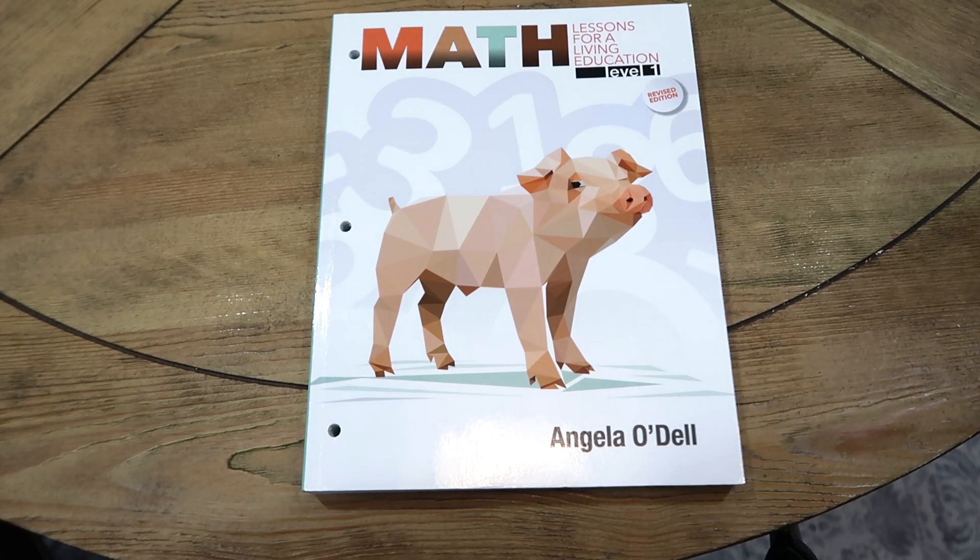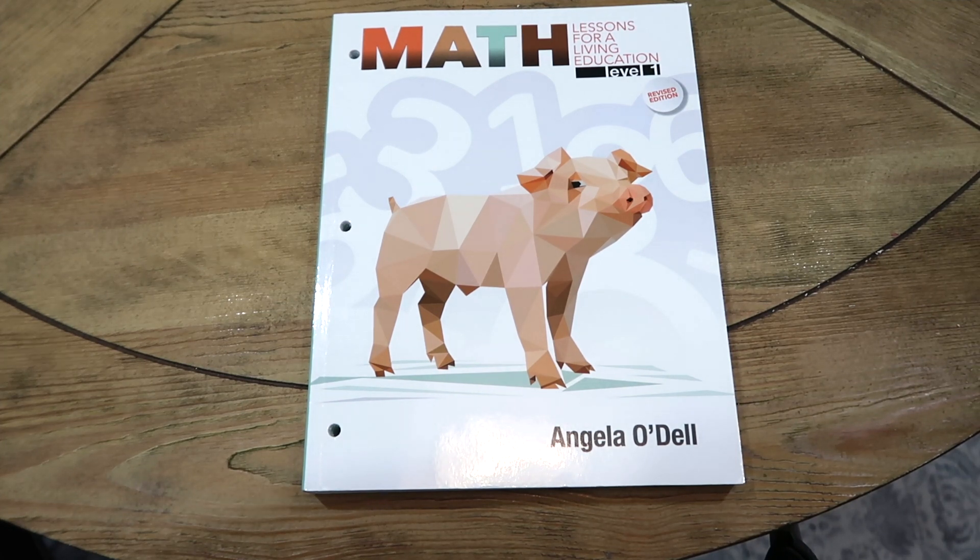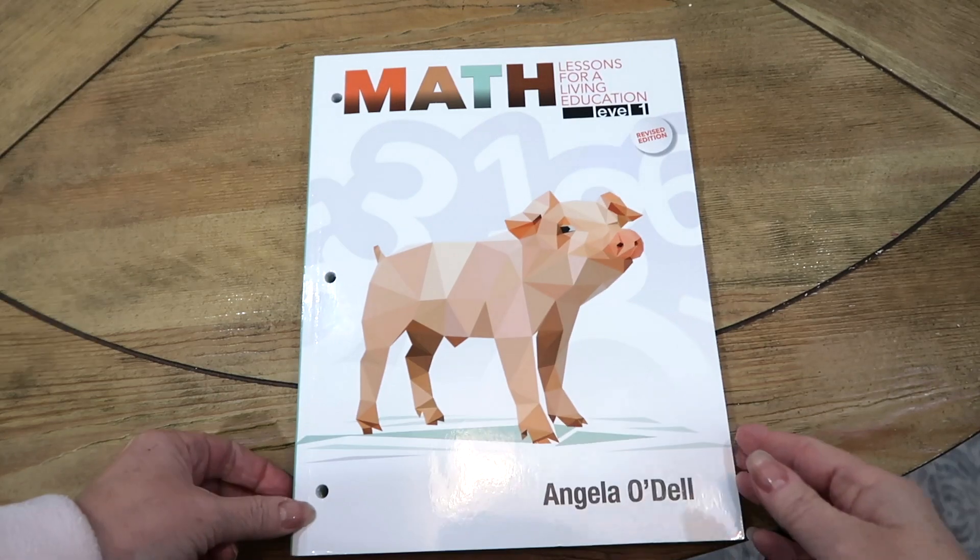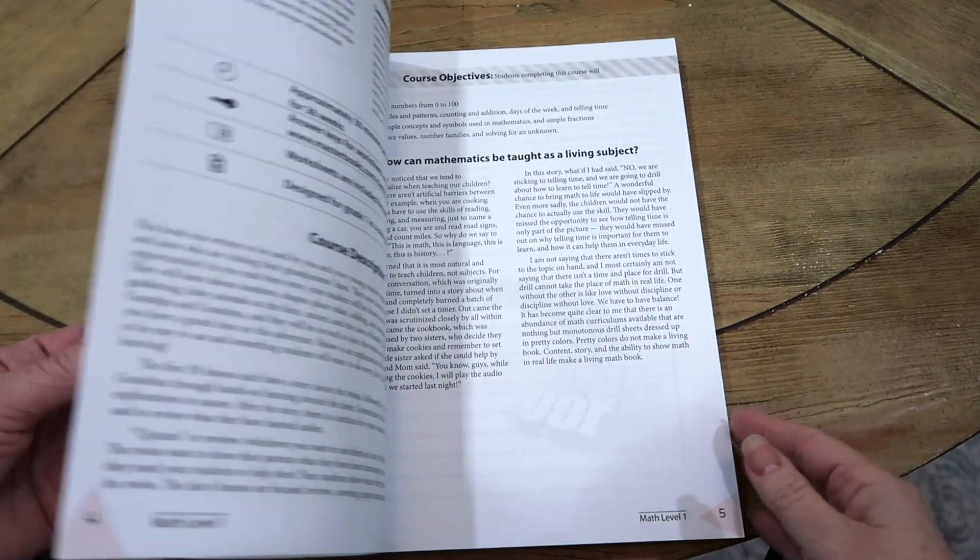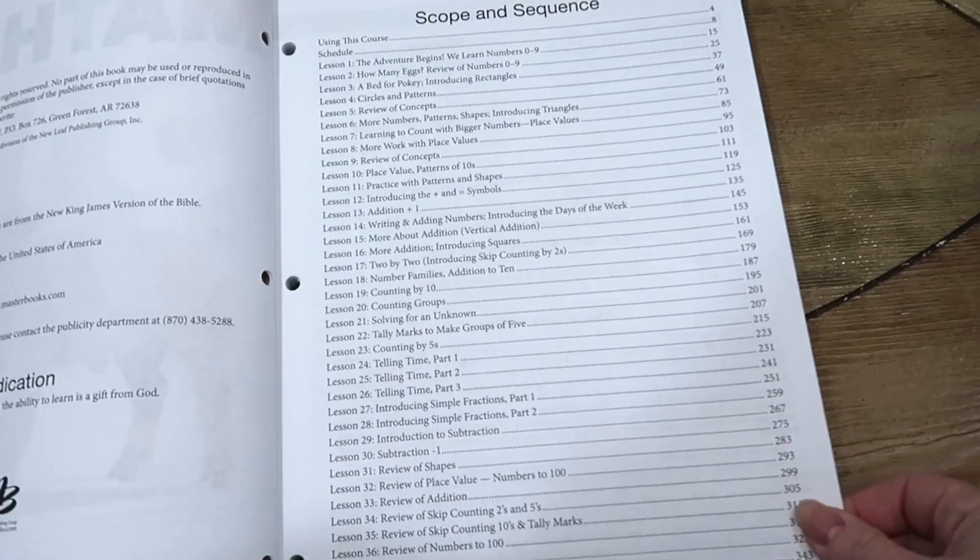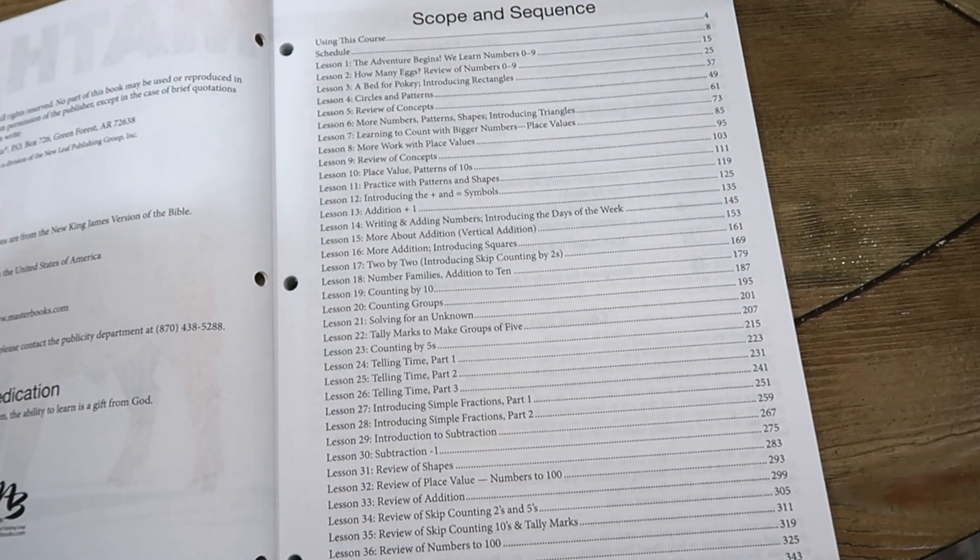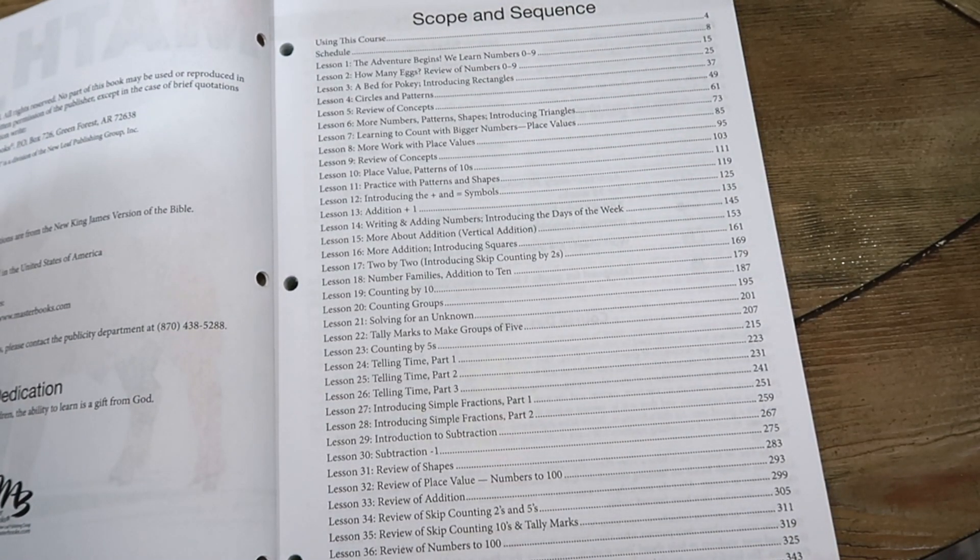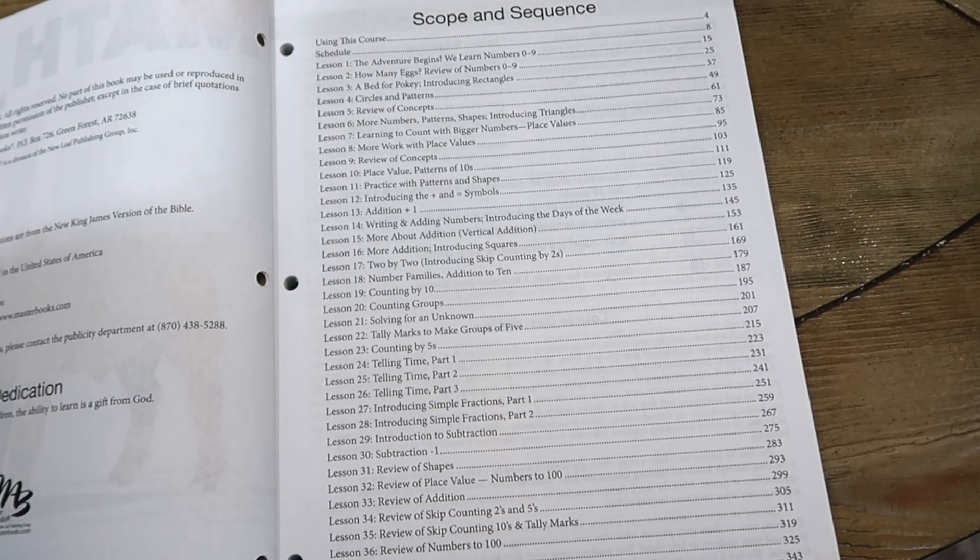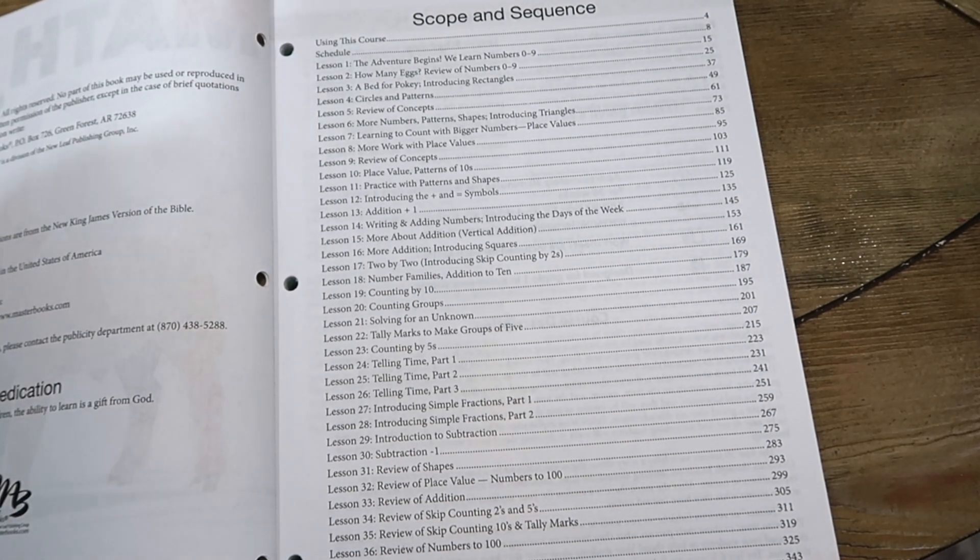This is Math Lessons for a Living Education Level 1 from Masterbooks. Let's take a look at the book before we show the lesson. In the beginning it shows the scope and sequence. They start with just counting numbers, review of numbers 1 through 9, they do patterns, they begin place value, patterns of tens.